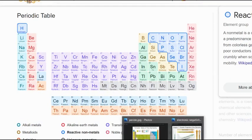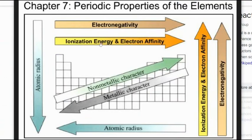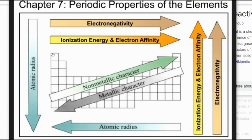Most questions will be asked based on periodic trends. Electronegativity increases from left to right and from bottom to top of the periodic table. Ionization energy and electron affinity also increase from left to right and from bottom to top. Atomic radius and atomic size decrease from top to bottom and from left to right. Once you are familiar with these trends, you can solve any question in the periodic table.